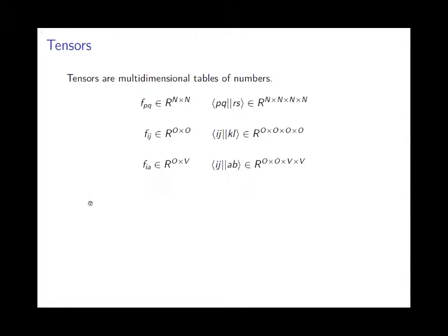So, what are tensors? For us, tensors are simply multi-dimensional tables of numbers. Let me give a couple of examples from quantum chemistry. Suppose we have a Fock matrix — it is defined as a matrix in the space of real numbers, an n-by-n table where n is the number of molecular orbitals. We can also have two-electron repulsion integrals, PQRS, in their anti-symmetrized form, which would be a four-dimensional table of real numbers.